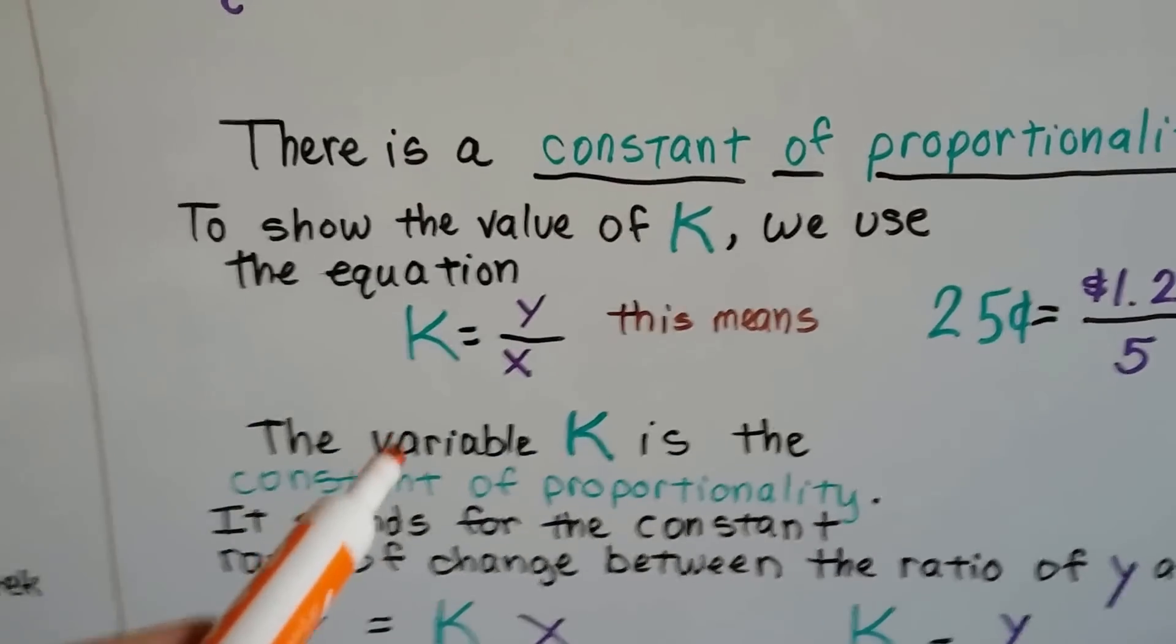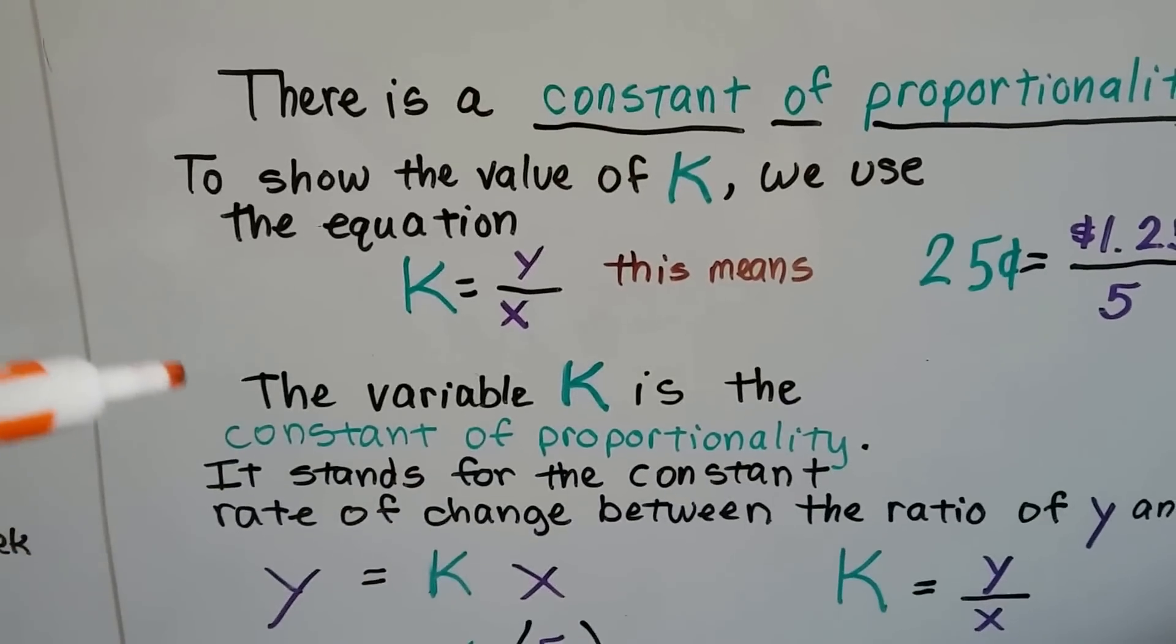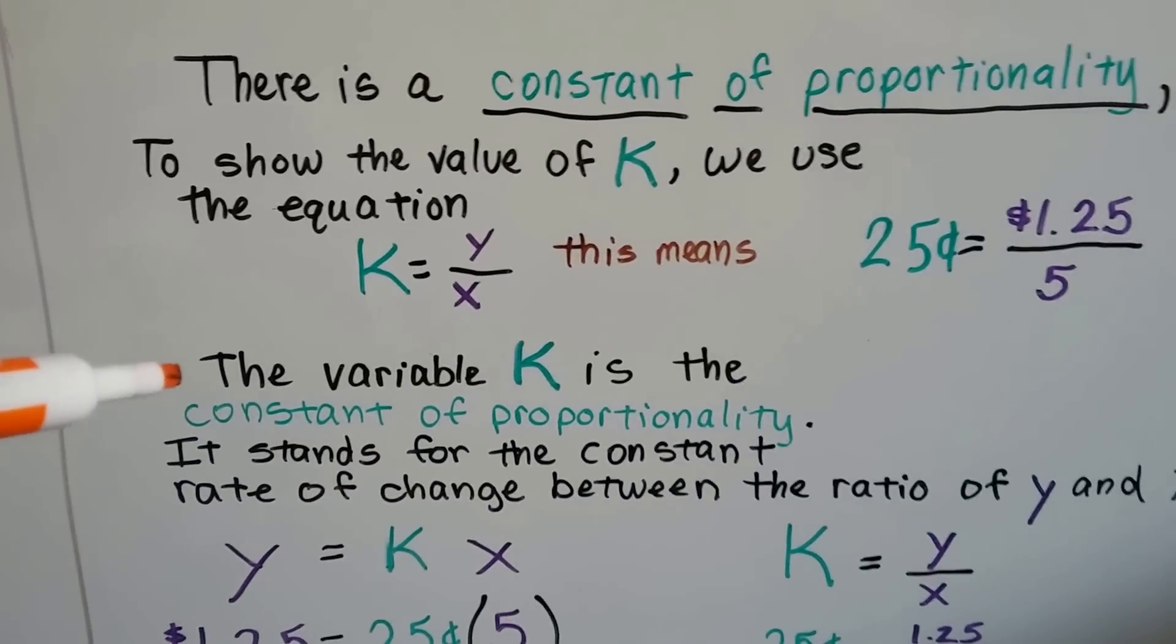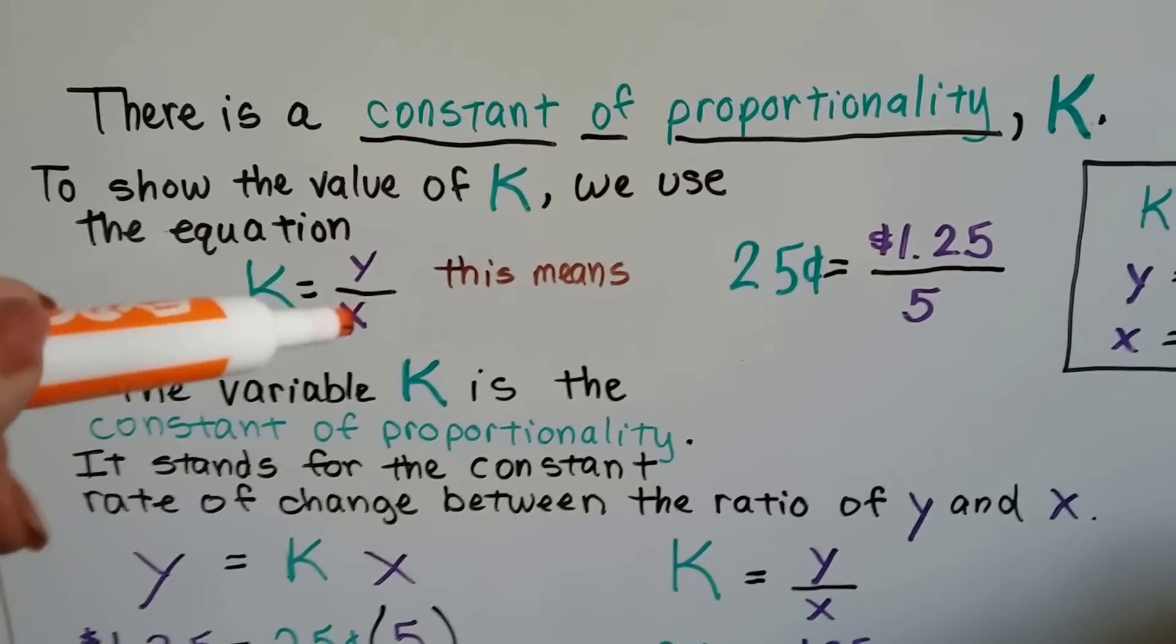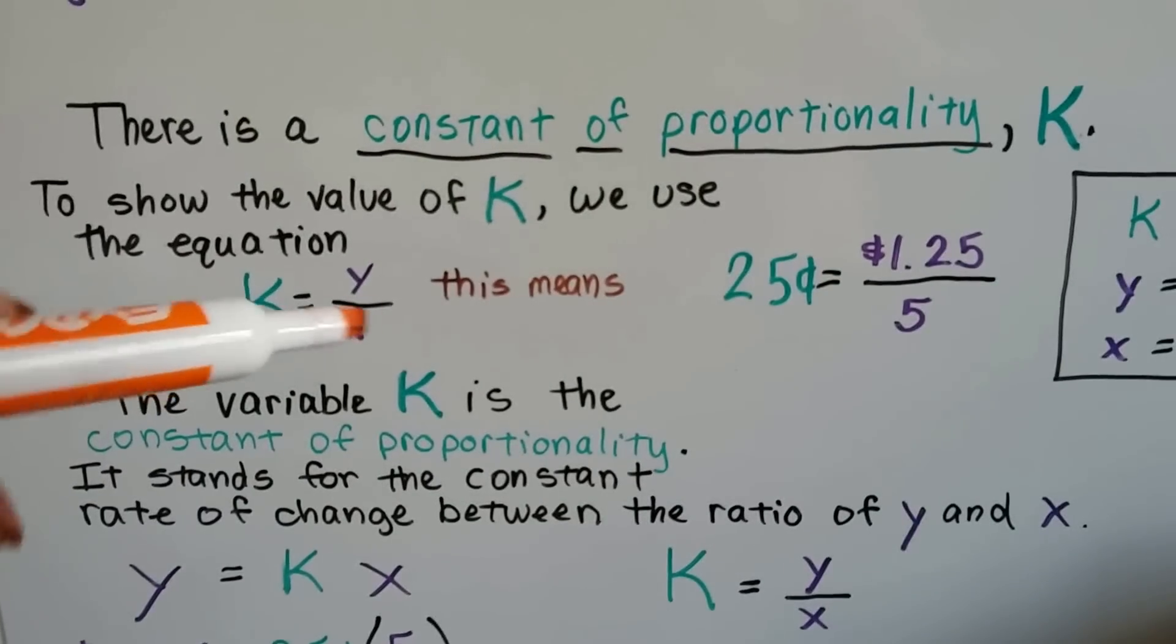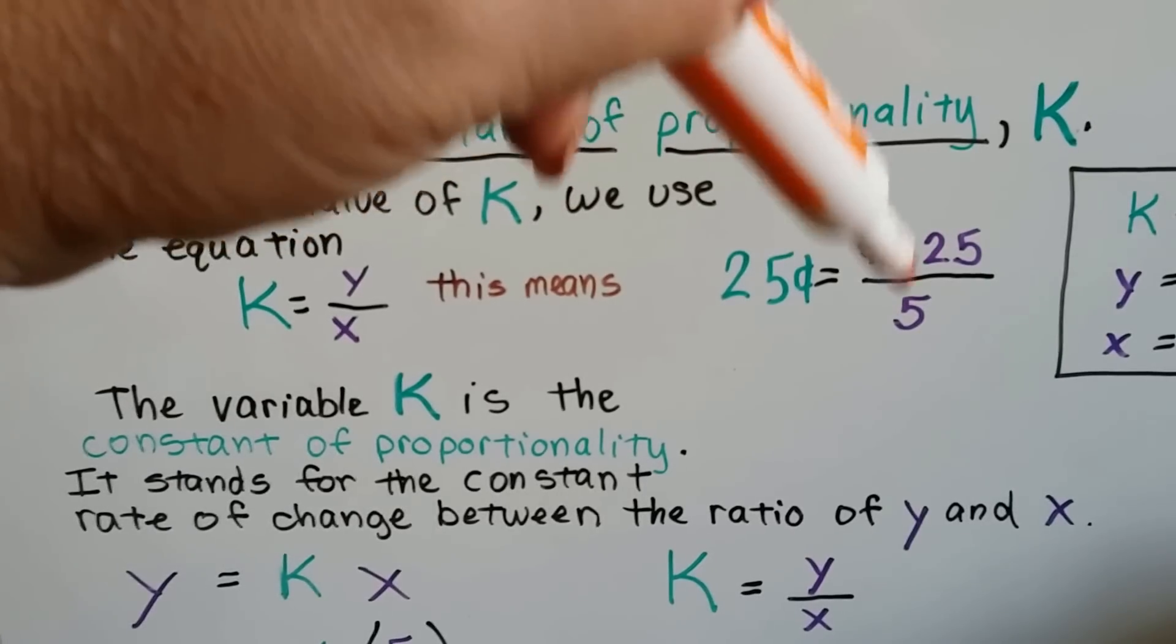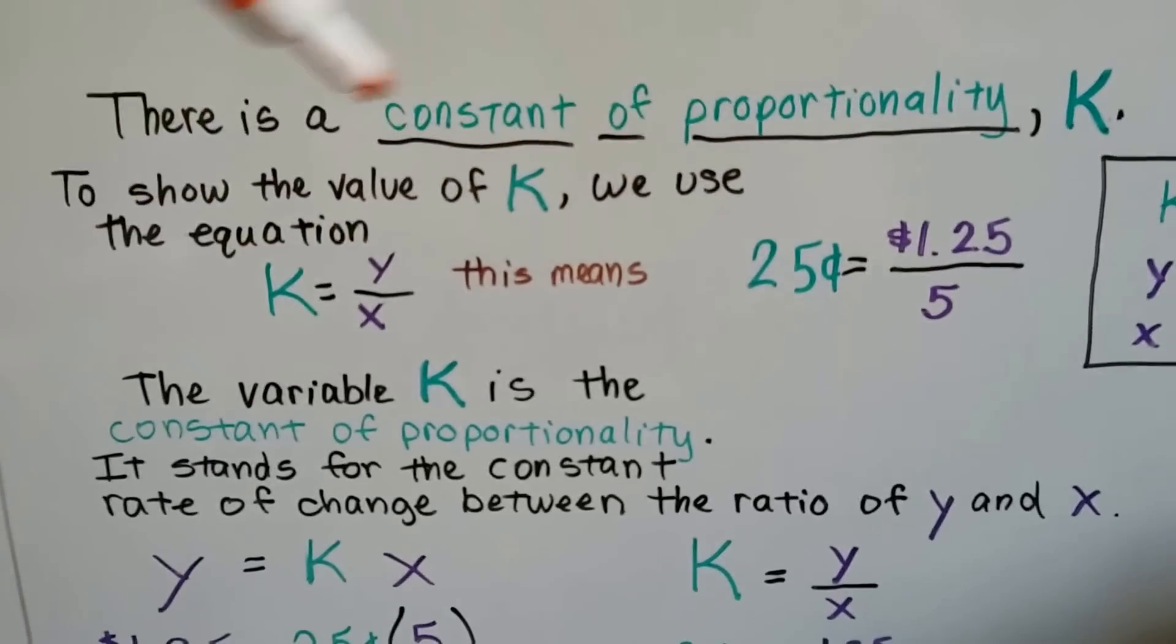This variable K is the constant of proportionality. It stands for the constant rate of change between the ratio of Y and X. This $0.25 is the change that occurs between the amount of money we have and how many quarters we add.